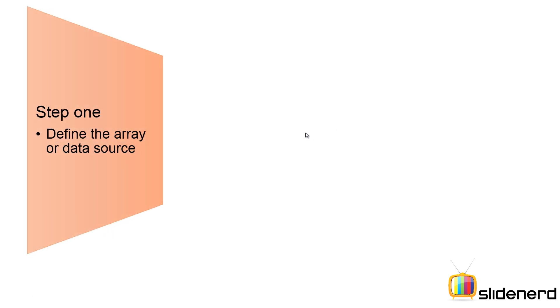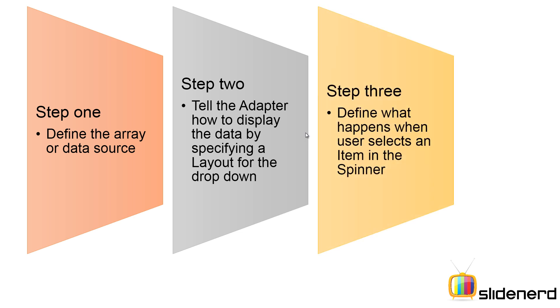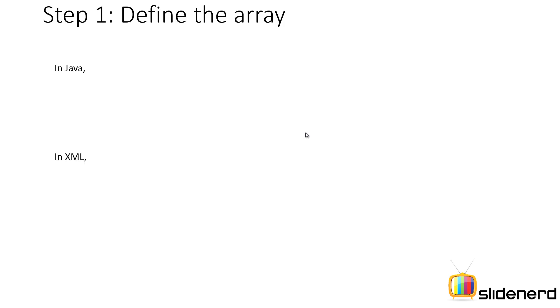So what are the three steps involved in making and using a spinner? Step 1: define the array data source. Step 2: tell the adapter how to display the data by specifying a layout for the drop-down. Step 3: define what happens when the user selects an item in the spinner.